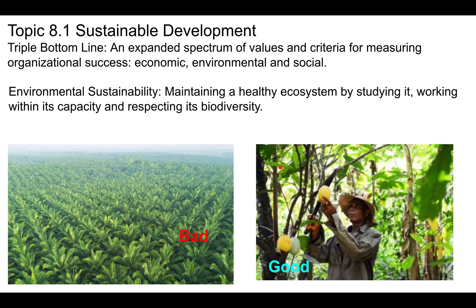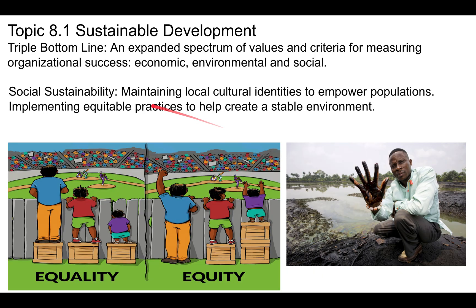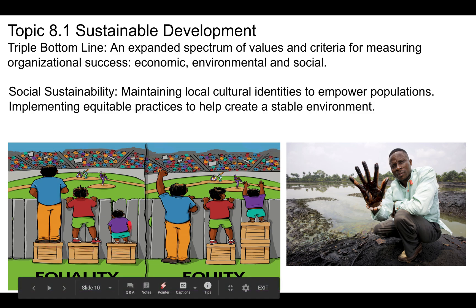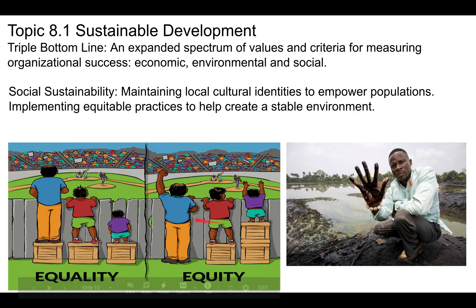We also need social sustainability — maintaining local cultural identities to empower populations and implementing equitable practices to create a sustainable environment. There's an important image showing the difference between equality and equity. Equality means everyone gets the same crate, but one person still can't see over the wall. Equity ensures everybody has the same access to a resource — in this case, the baseball game.